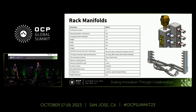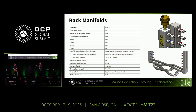Next is the rack manifold. We try to define the liquid volume, the dimension, and the weight of the manifold. This picture shows a quick disconnect — it could be a blind mate or a latched one, so it's a variation. It all depends on how you design it; there are a lot of options you can choose from. And also the air vent for the manifold.